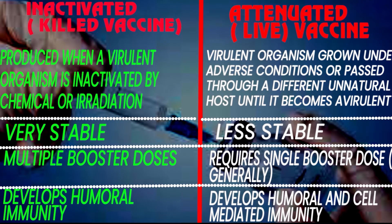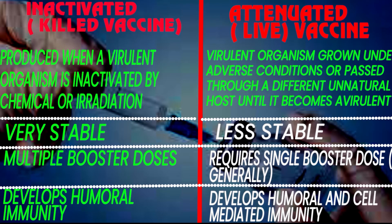An attenuated or live vaccine is produced when the virulent organism is grown under adverse conditions or passed through a different host until it becomes avirulent. It is less stable, requires a single booster dose, and produces both a humoral and a cell-mediated immune response.